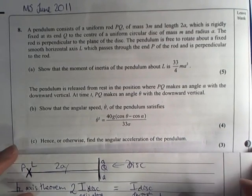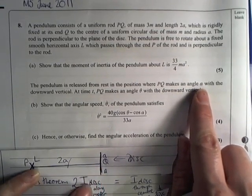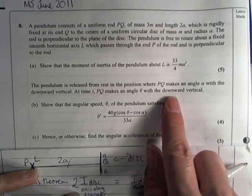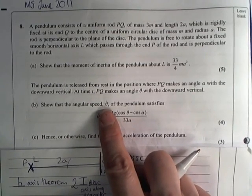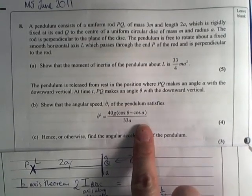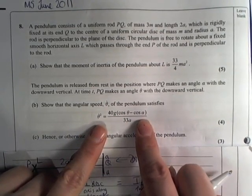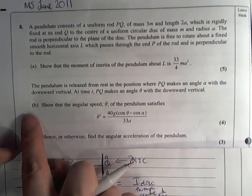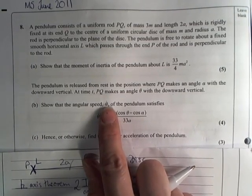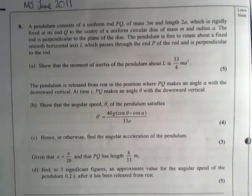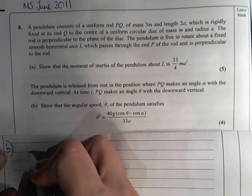In part B, it says the pendulum is released in the position where PQ makes an angle of alpha with the downward vertical, and at time t, PQ makes an angle of theta. Show that the angular speed theta dot of the pendulum satisfies this equation. This equation looks like energy to me. Let's first of all begin by drawing a little diagram.